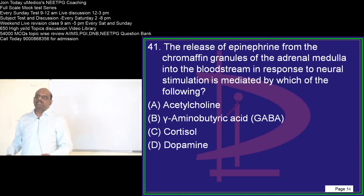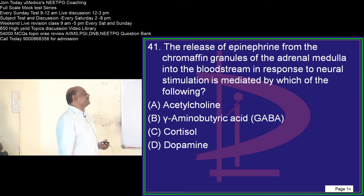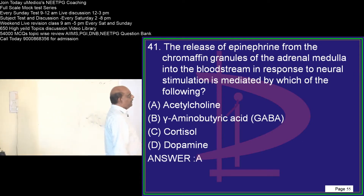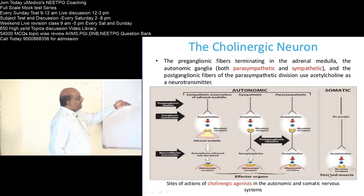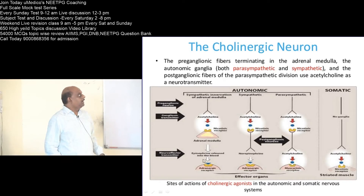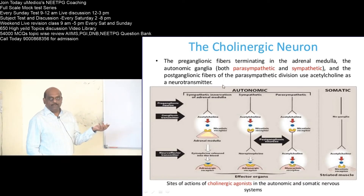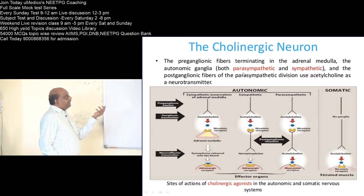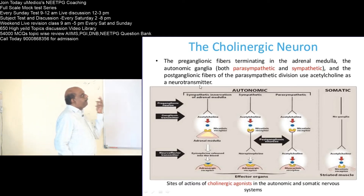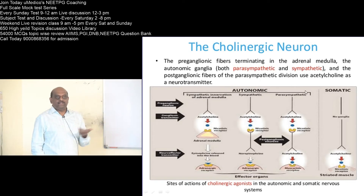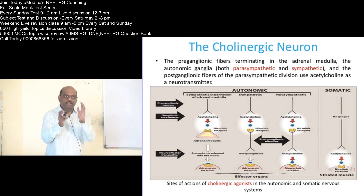Where are the locations where acetylcholine is a neurotransmitter? Typically, the preganglionic fibers which terminate in the adrenal medulla are acetylcholine-producing. Both parasympathetic and sympathetic autonomic ganglia, and the postganglionic fibers of the parasympathetic division — in these three locations, acetylcholine is the neurotransmitter.